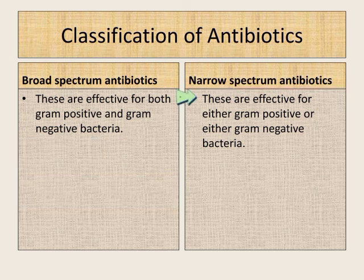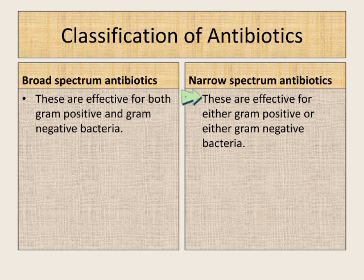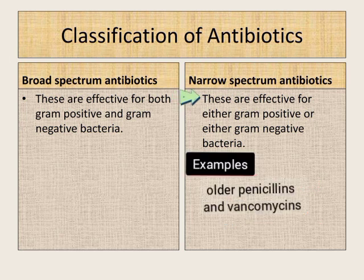Narrow spectrum antibiotics are effective for either gram-positive or gram-negative bacteria. Examples of narrow spectrum antibiotics are older penicillins and vancomycins.